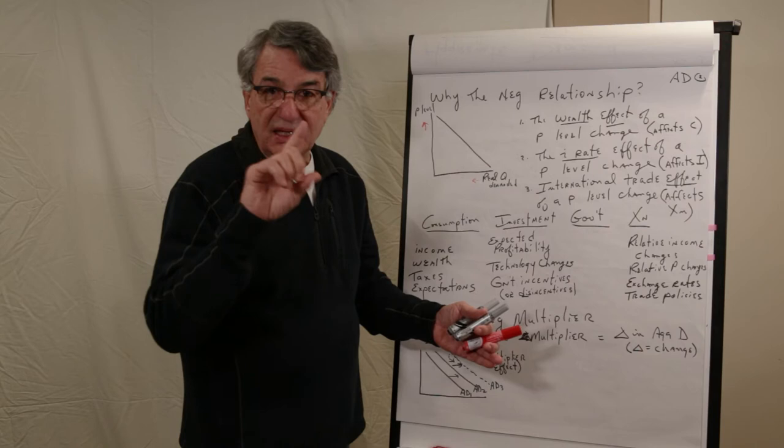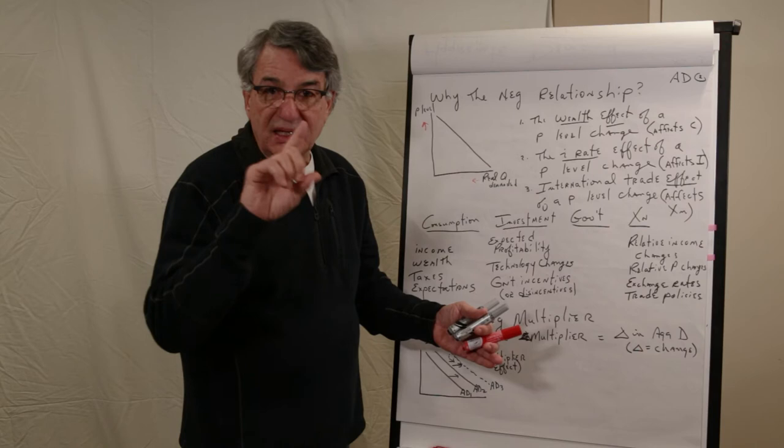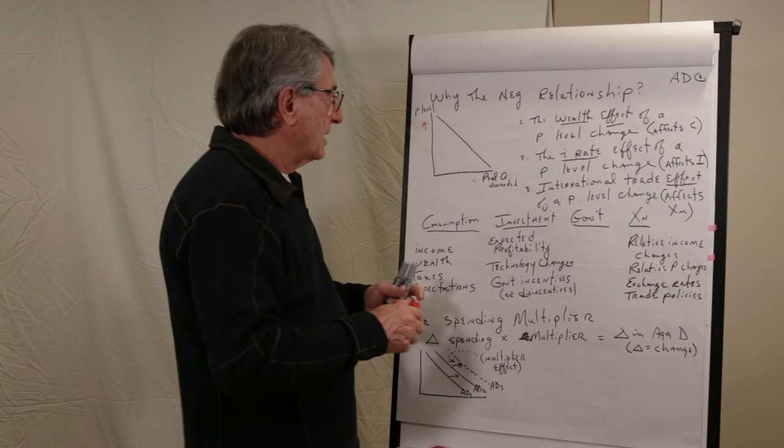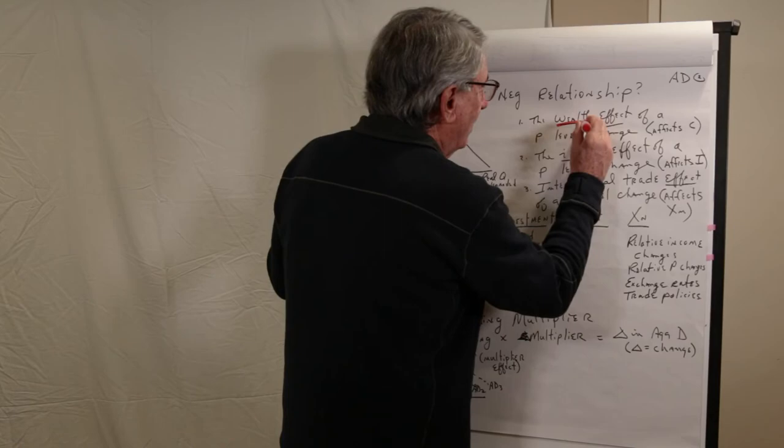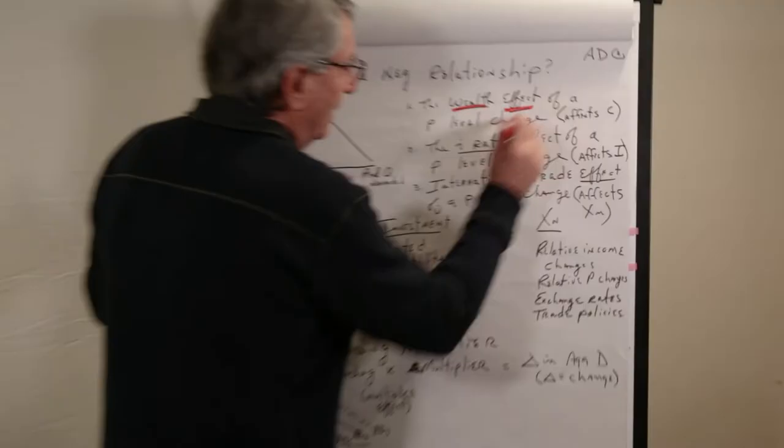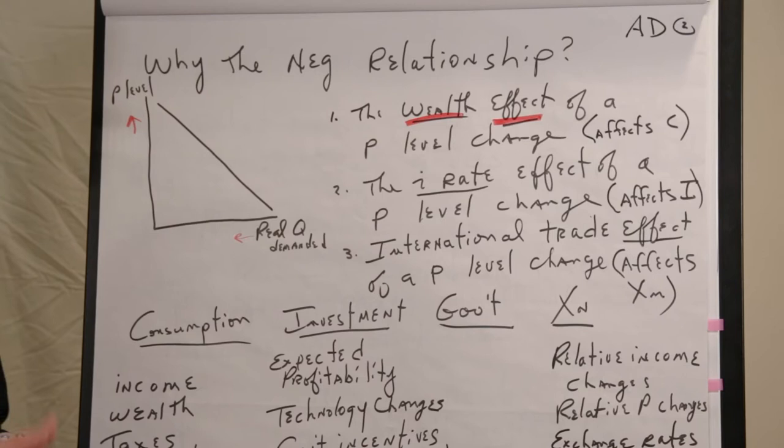But this is not like that. This is the price of all goods. And so there is no income effect, there is no substitution effect to consider. So why is it that when the price goes up, the real quantity of goods demanded goes down? Because of the wealth effect of a price level change.